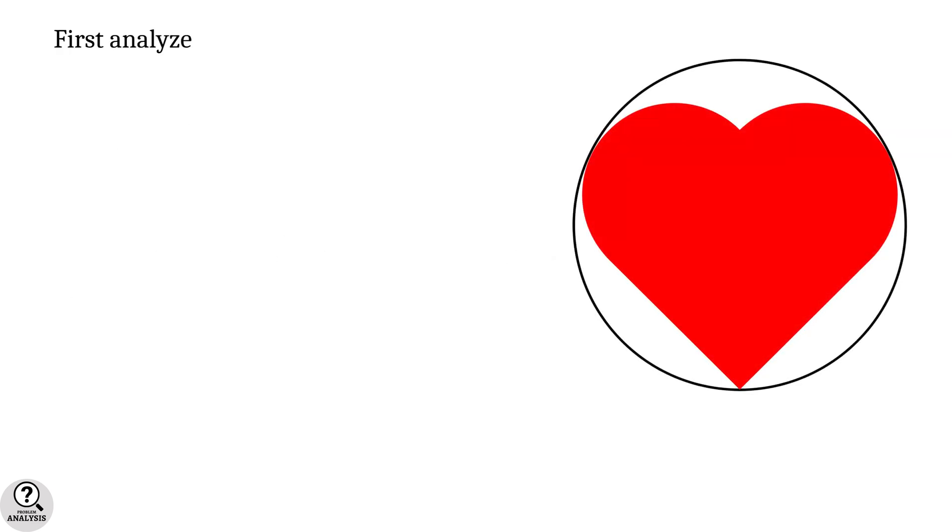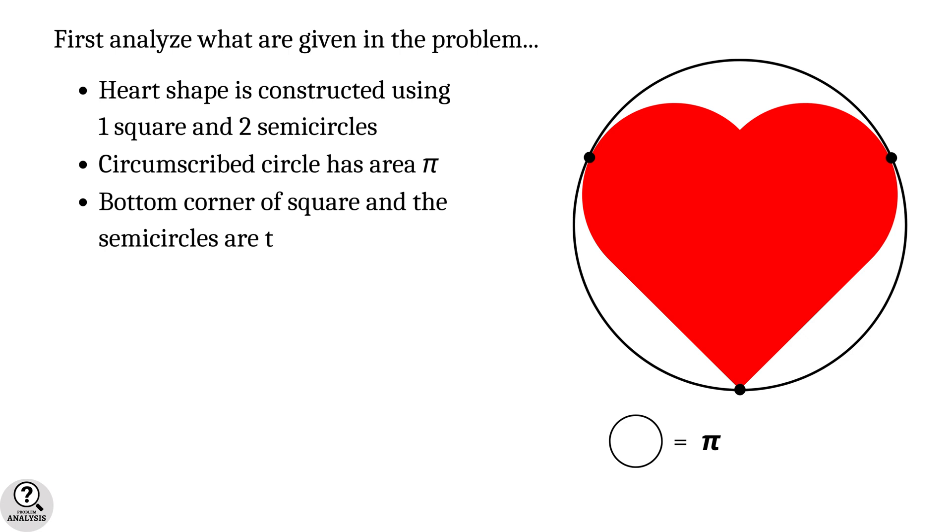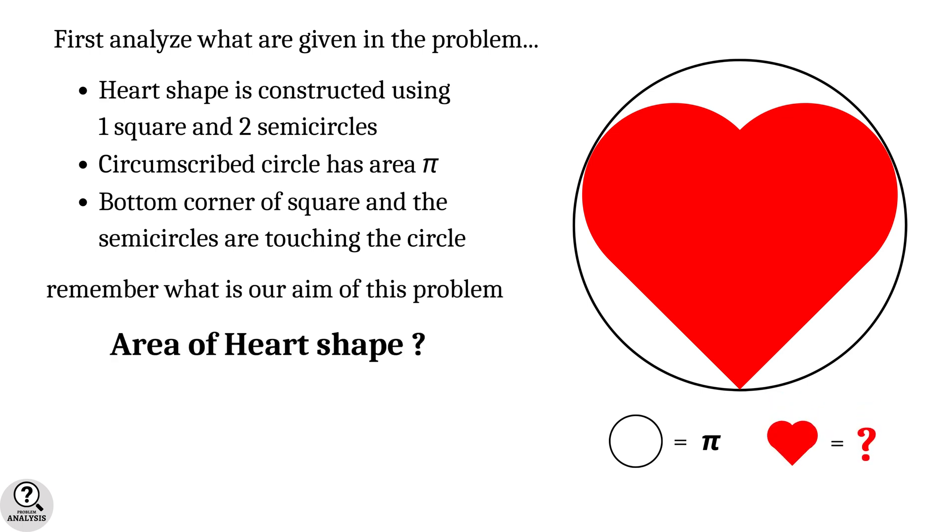First we have to analyze what are given in the problem. First of all, the heart shape is constructed using one square and two semi-circles. Secondly, the circumscribed circle has area pi square units. And finally, the bottom corner of the square and the semi-circles are touching the circle. Now remember what is our aim of this problem? It is nothing but to find the area of the heart shape. This is the structure of our problem, so always keep in mind.